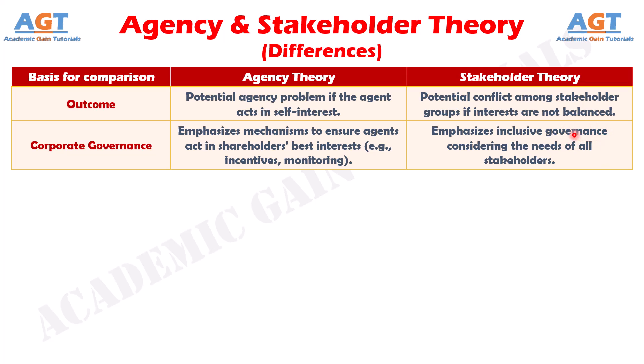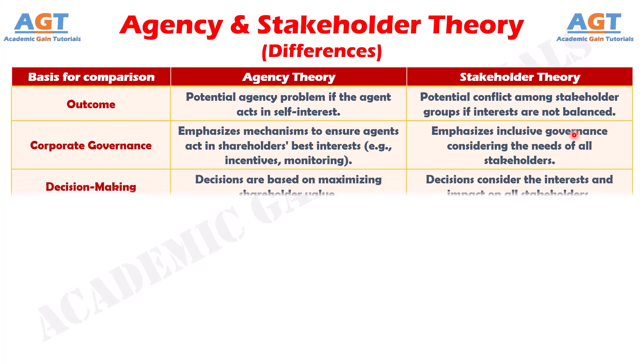Number eight: agency theory prioritizes shareholder returns in decision-making, whereas stakeholder theory considers the broader impact on all stakeholders.